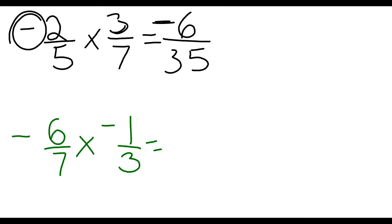So negative 6 thirty-fifths. 6 and 35 have nothing in common that they can both be divided by, so it is simplified, and that is our final answer.